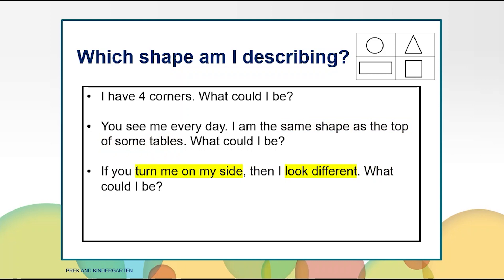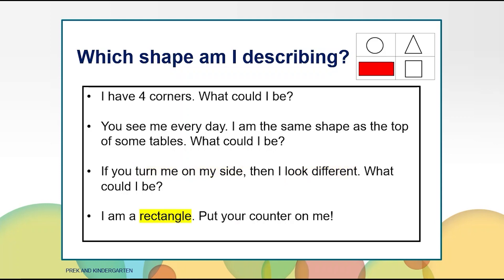Now that you have all of the clues, decide if you want to keep the counter or move it to a different shape. The answer is a rectangle. Put your counter on the rectangle. The rectangle has four straight sides, but two of the sides are longer than the other two. Also, when you turn it on its side, it looks different.